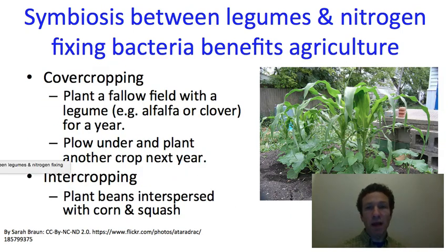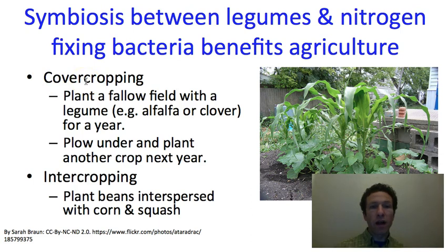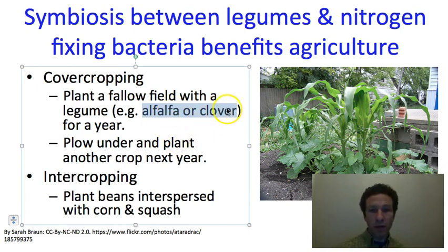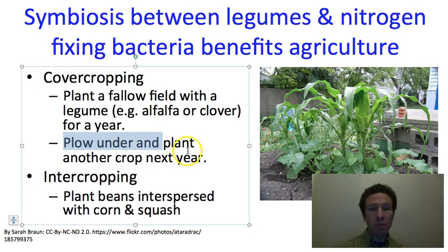The symbiosis with nitrogen-fixing bacteria is also important in agriculture. Especially before synthetic fertilizers, farmers used cover cropping — letting a field be fallow and planting a legume like alfalfa or clover for a season. The plants would form associations with bacteria, which would fix nitrogen; some would end up in the soil and some in the plants. The plants were then plowed into the soil, and those nutrients became available as the plant decomposed, providing extra nitrogen for the following year's crop.